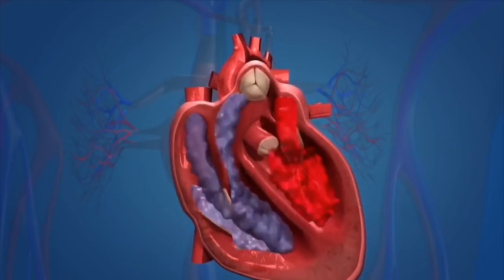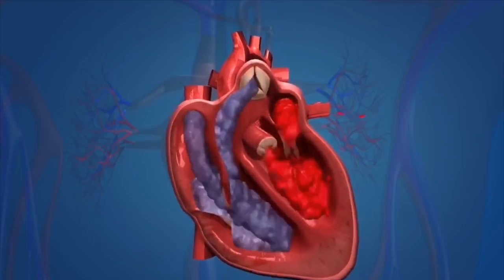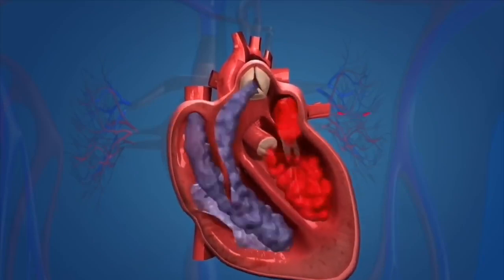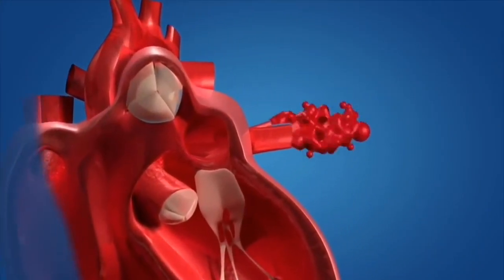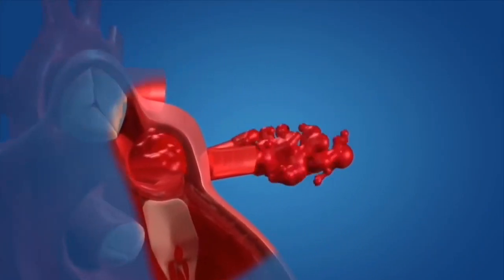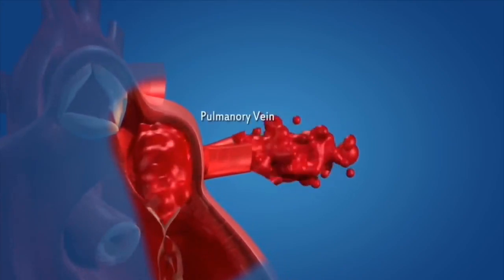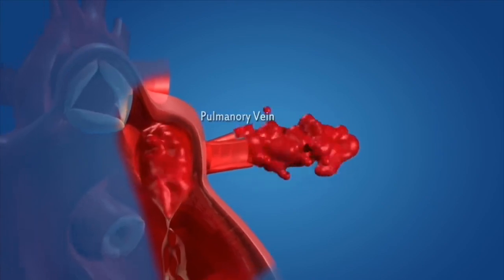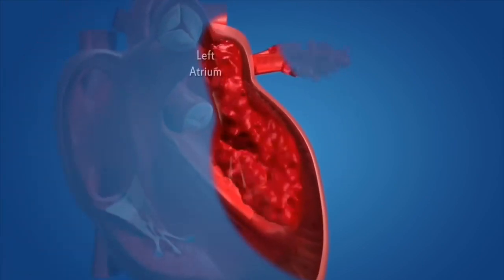The function of heart is started when oxygen-rich blood is carried from the lungs to the left atrium of the heart through pulmonary veins. When the left atrium relaxes, the blood pumps into the heart, and when the left atrium contracts, the left ventricle relaxes simultaneously.